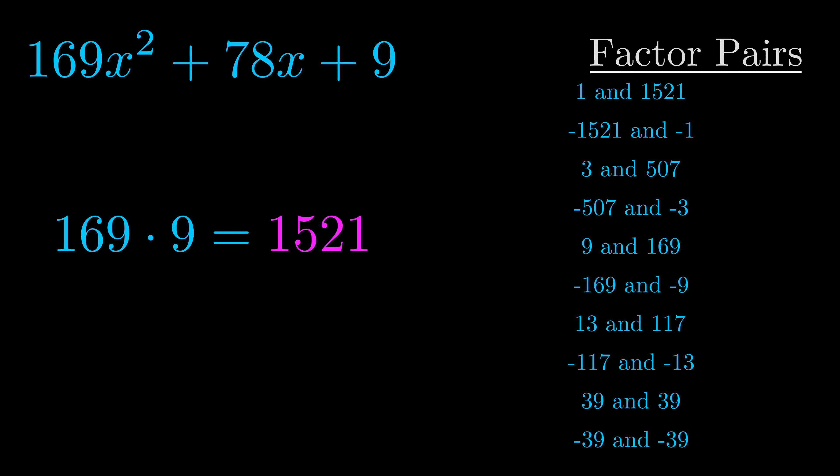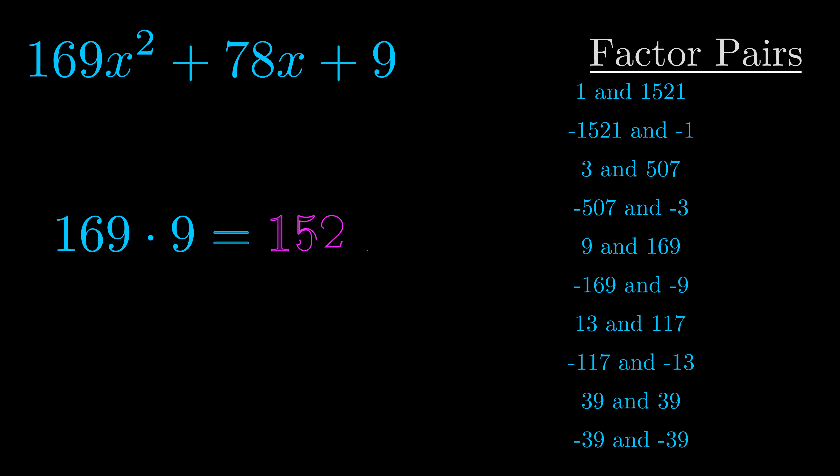Now once you have these factor pairs, the goal is to find which of these pairs adds to the b value. The b value is the coefficient on the x term. That's the middle term, the one that we haven't done anything with yet. And really this is the only factor pair that we need.